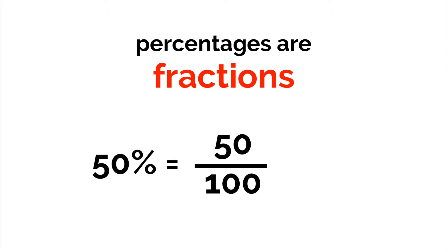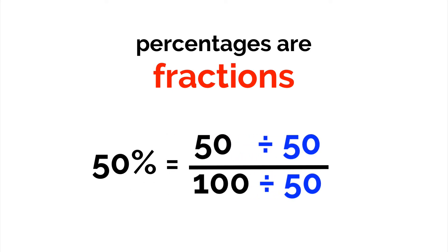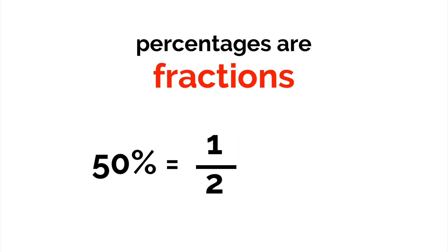Moving to another example, 50% is 50 one-hundredths. And dividing both numbers by 50, we get one-half. This makes sense as 50 is half of 100.